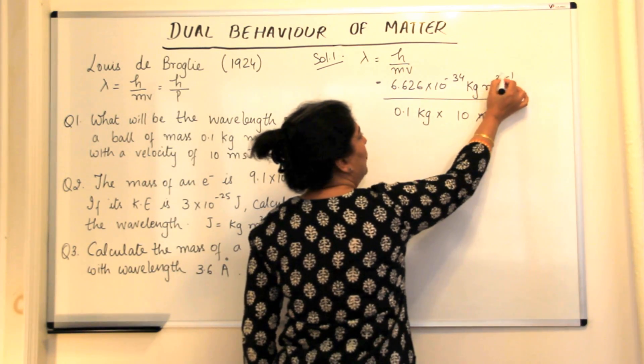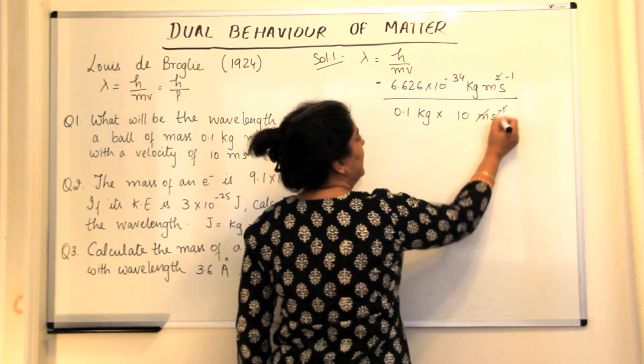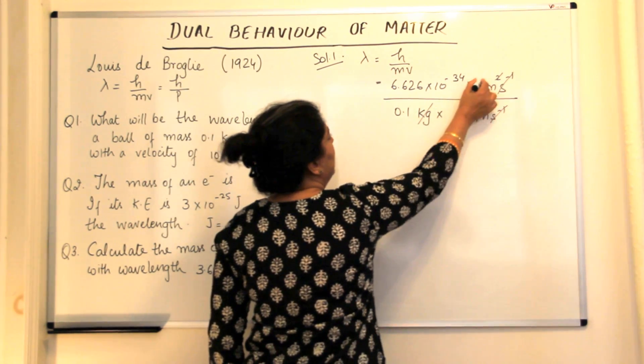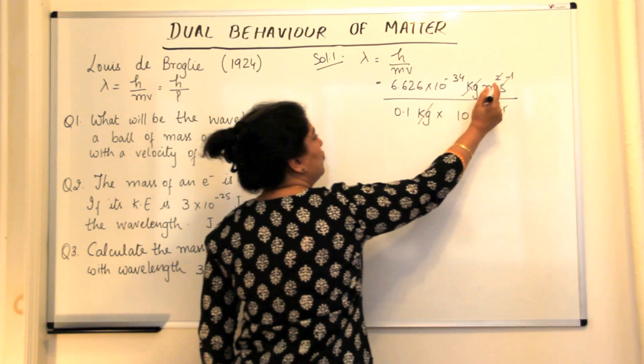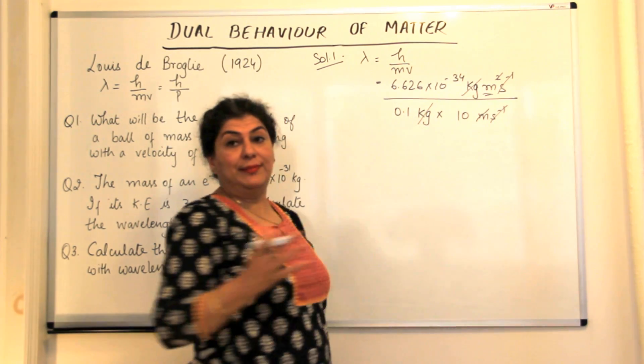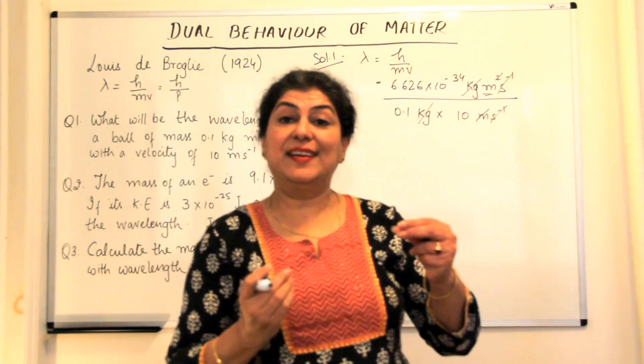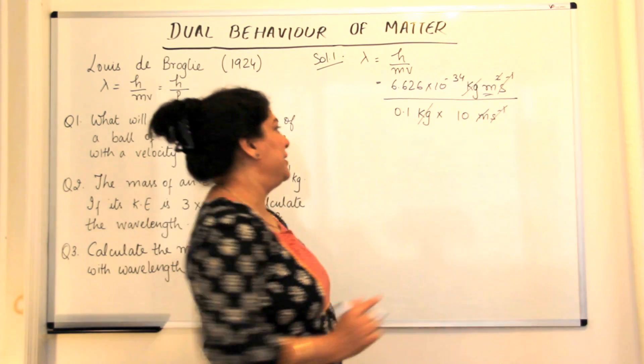Meters and meter, one meter is gone here. Second inverse, second inverse is gone here. Kg and kg is gone here. So we are left with just one meter here. So that's right. If you're getting the right units, it means you've plugged in the correct values.